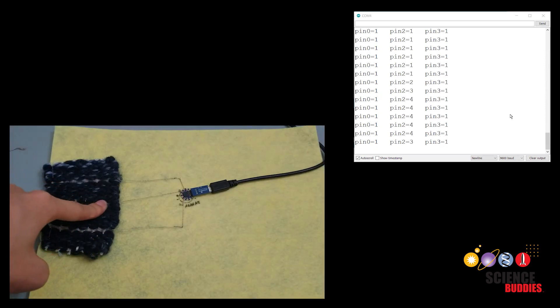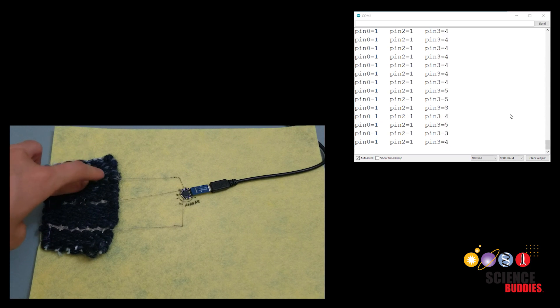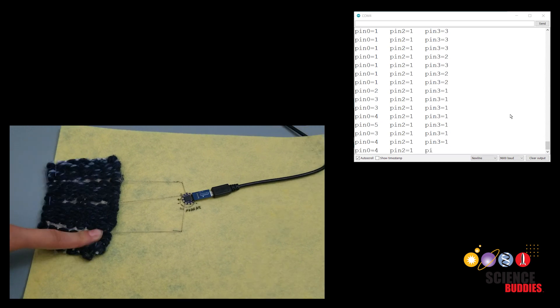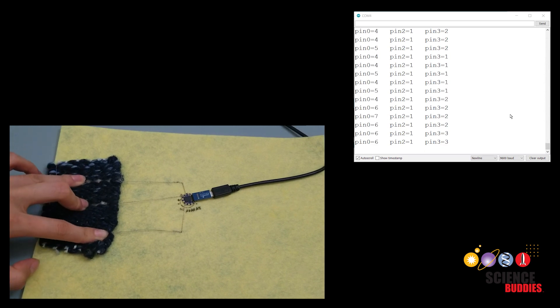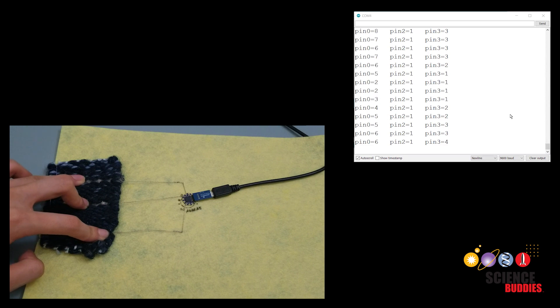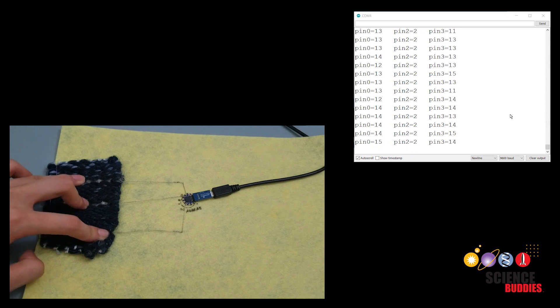Touch a woven conductive thread patch. Each patch is a different sensor. Only touch one part at a time. You should see that one of the pin's values change. Remove your hand from the sensor. The pin value should go back to 1. Test all your patches. If the values do not change, or if the value is not 1 when you are not touching it, double check to make sure threads from different patches are not touching each other.